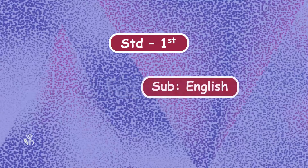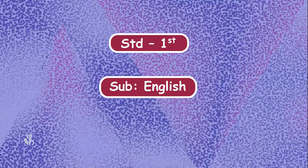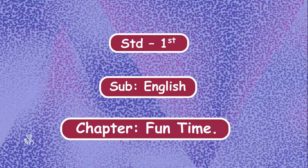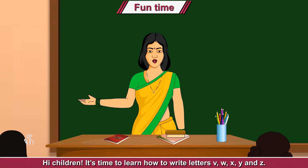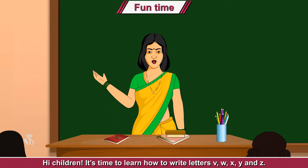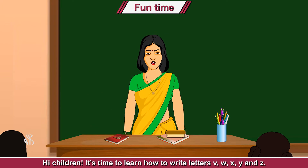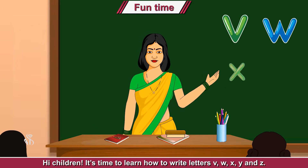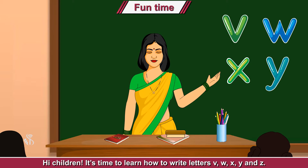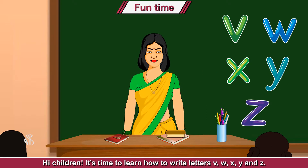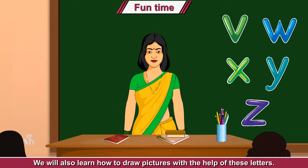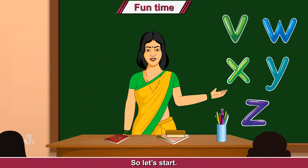Standard First Subject, English chapter: Fun Time. Hi children, it's time to learn how to write letters V, W, X, Y, and Z. We will also learn how to draw pictures with the help of these letters. So let's start!